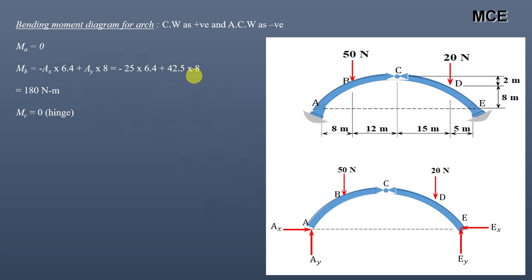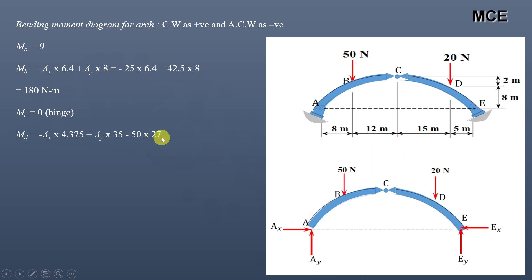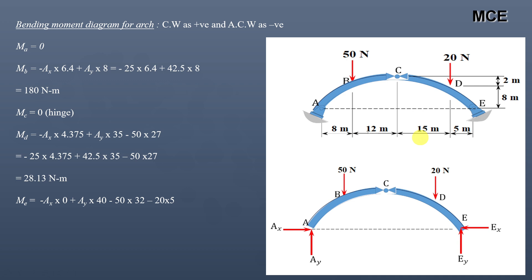The bending moment at C is zero because it is a hinge support. The bending moment at D: minus Ax into the ordinate at D (4.375 meters) — this moment is anti-clockwise — plus Ay into 35 (lever arm of Ay from D is 8 plus 12 plus 15 equals 35 meters, clockwise), minus 50 into 27 (moment of 50 newtons about D, lever arm is 12 plus 15 equals 27 meters). This gives a bending moment at D equal to 28.13 newton-meters.